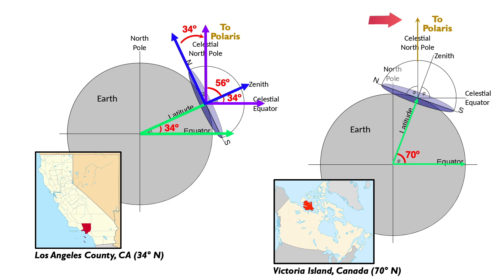Following the arrow pointing at Polaris now we can see that the angle between your horizon and the star is 70 degrees this time.